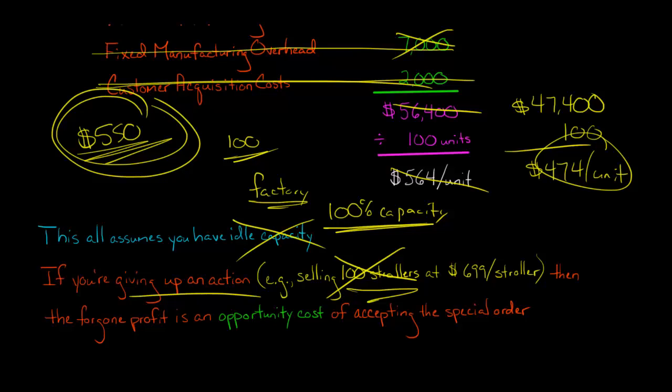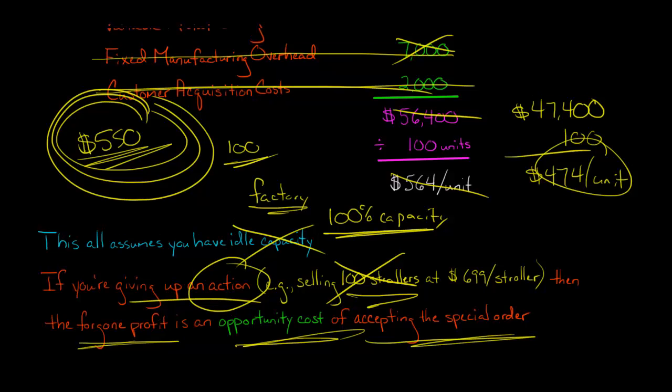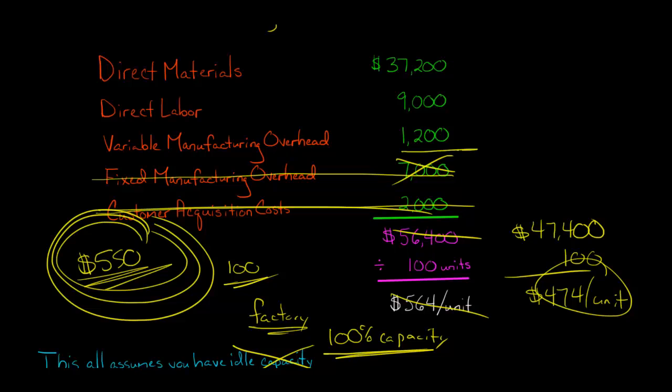And so if that's the case, if you do not have idle capacity, you're like, hey, we don't have any extra capacity. If we accept this order, we're going to give something up. Then the foregone profit of the activity or action that you're giving up, that's an opportunity cost of accepting the special order. So then we would have that, whatever the foregone profit is, that would be listed in here as another cost of accepting the order. But we would still think about the same thing. We would think about the same way and say, what is the incremental revenue of accepting the order? In this case, we're just thinking about the price. And then we subtract the incremental cost. That's how you decide whether to accept or reject a special order.